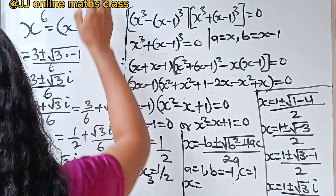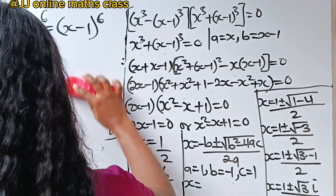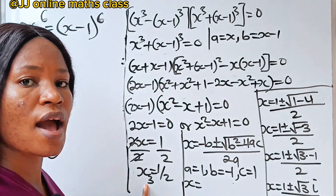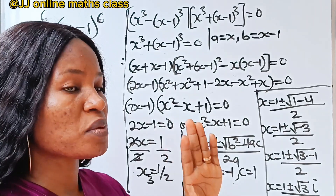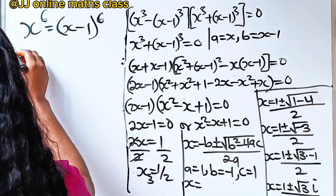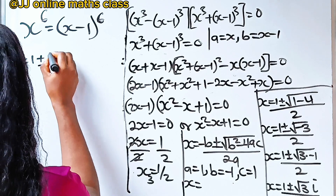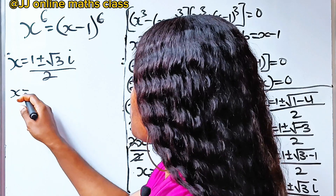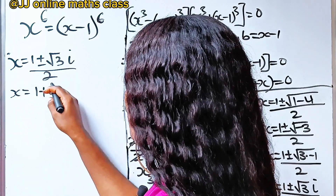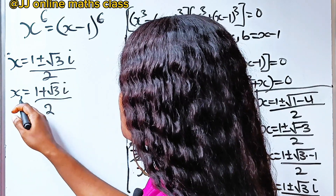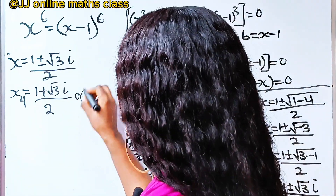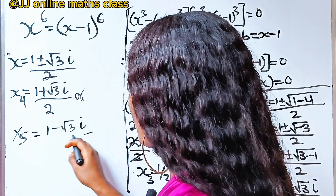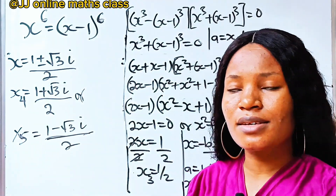So we have five values of x in total. x four equals one plus root three i, divided by two, and x five equals one minus root three i, divided by two. Only x three, which is one half, is a real value.